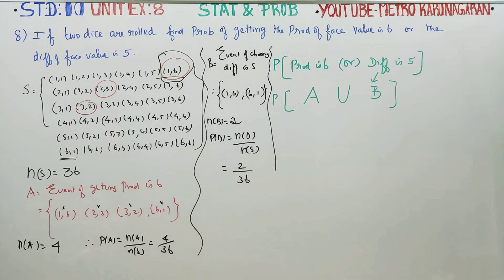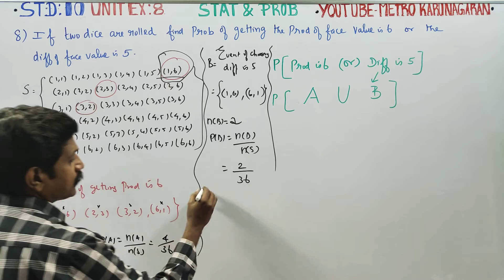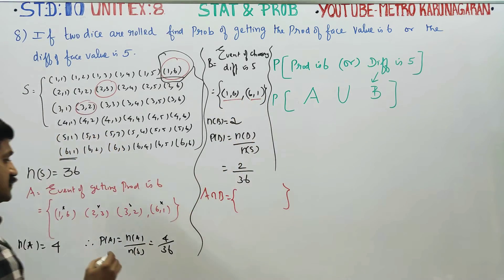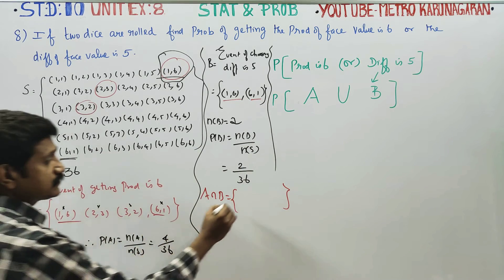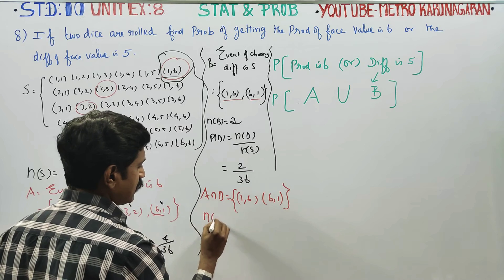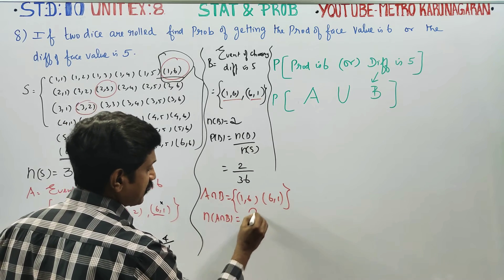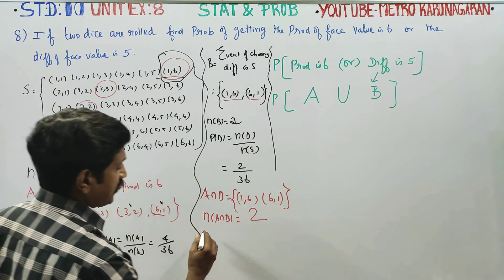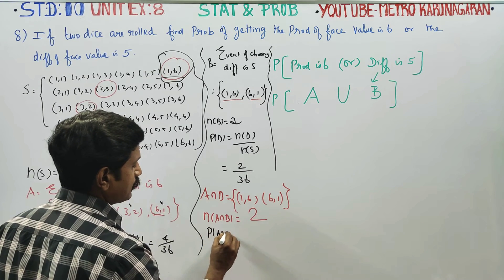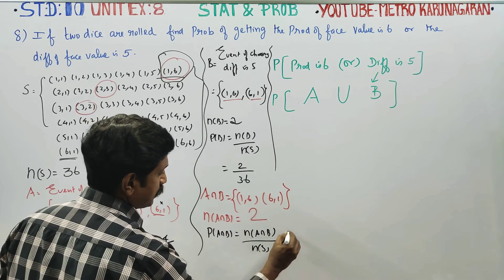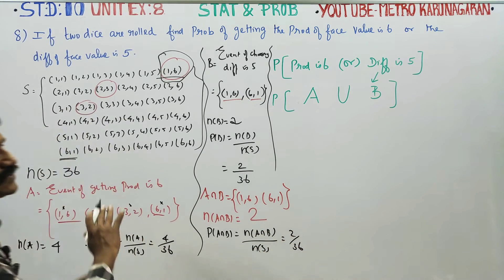Now, intersection A and B. (1,6) and (6,1) - that's 2 elements. N of A intersection B equals 2. What is P of A intersection B? P of A intersection B is equal to N of A intersection B by N of S, which is 2 by 36. Everything is ready.